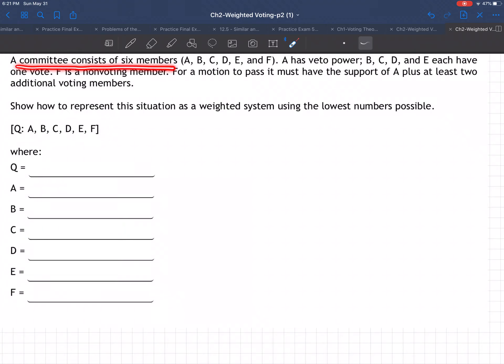A committee consists of six members A, B, C, D, E, and F. A has veto power. B, C, D, and E each have one vote.